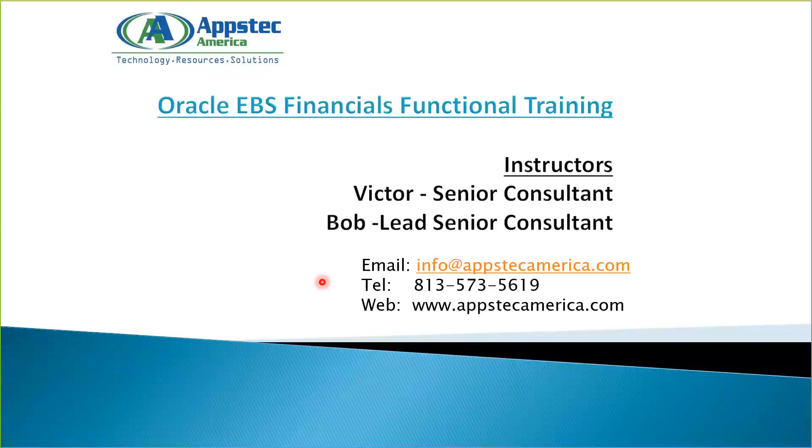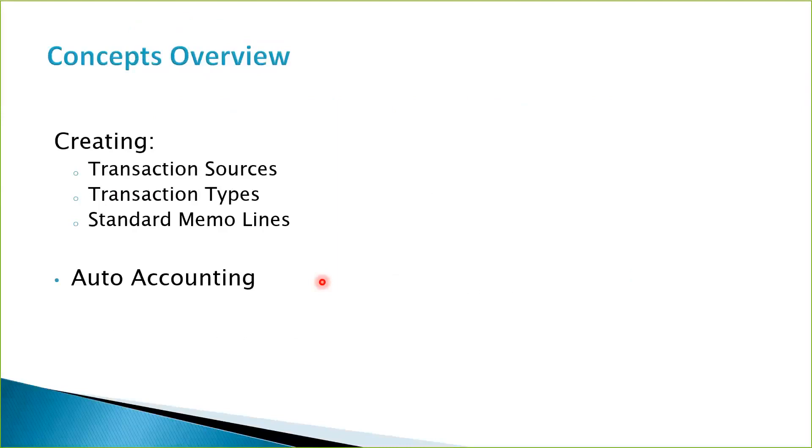Thank you, Bob, for the introduction. Welcome everybody to this lesson in our Financial Functional Training series. In this session, we are going to talk about creating transaction sources, transaction types, and standard memo lines — with a view to finally use two of those features, transaction types and the memo lines, to define the rules for auto accounting. In our previous session, we talked about each of these features in some detail, and we saw what each one of them affects.